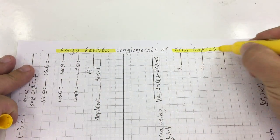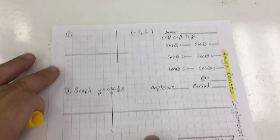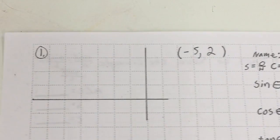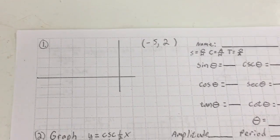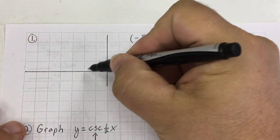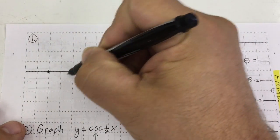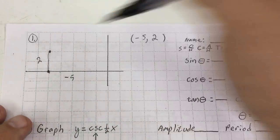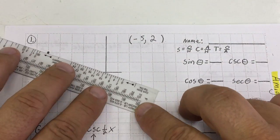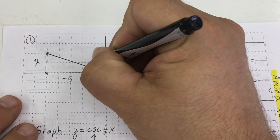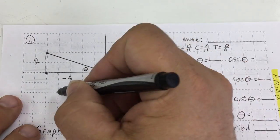I'm going to graph the point negative 5, negative 1, 2. And I'm going to draw that triangle. This will be my angle theta. I need to figure out what this side is over here.